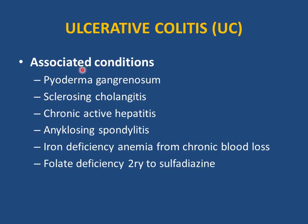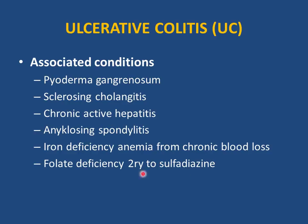Associated conditions with ulcerative colitis: pyoderma gangrenosum — may initially be mistaken for spider bite, then develops red papules or pustules, progressing to ulcers. Sclerosing cholangitis (inflammation of the common bile duct), hepatitis, and elevated liver enzymes. Back pain and ankylosing spondylitis. Iron deficiency anemia from chronic blood loss. After treatment, follow up for medication side effects such as sulfasalazine-related secondary folate/folic acid deficiency.